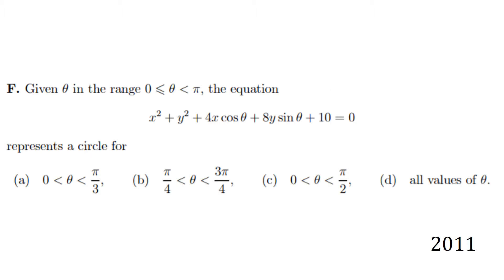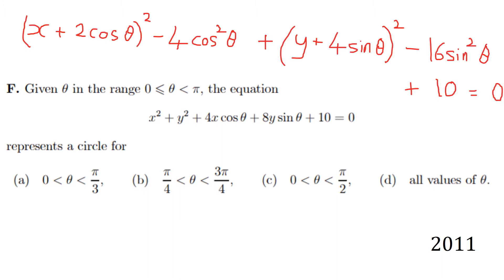This is one of the multiple choice questions from 2011. You need to know a little about the equation of a circle and some trigonometry is clearly required. What I've done is expanded — or rather factorised by completing the square — into the classic form: (x − a)² + (y − b)² = r².